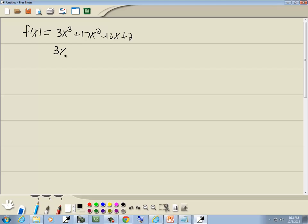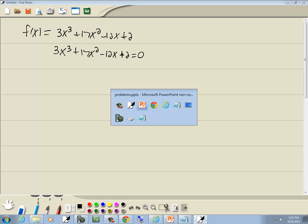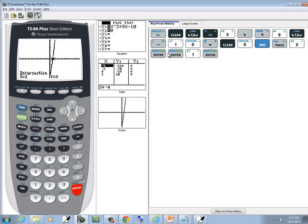Now finding zeros means we want to set this equal to zero and solve it. So I'm setting the polynomial equal to zero. Now we're going to put the polynomial on y1 and zero on y2 on our calculator.